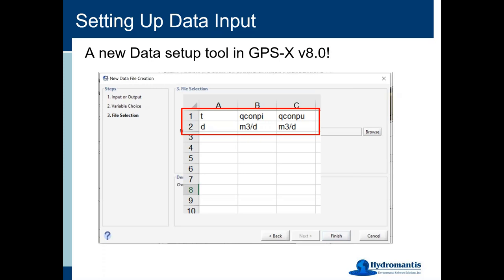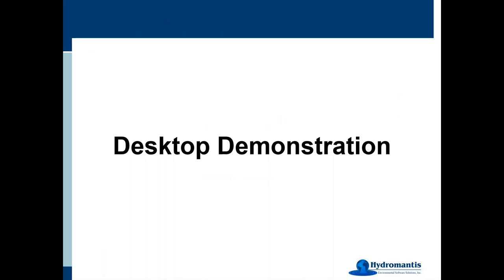A spreadsheet will be created and opened for you. At the top, GPSX will have filled in all the information it knows — time goes in the left-hand column using the date format. Depending on whether you have GPSX set to SI units or US units, it will use the appropriate units for you. We've also filled in the cryptic variable names, which is usually the most laborious part to find. So this is a good way to get set up, and once you have things rolling, you're ready to make a dynamic simulation.